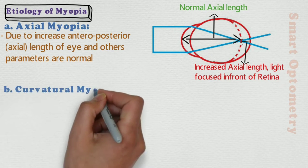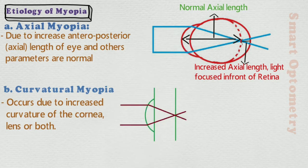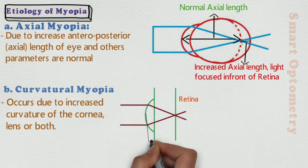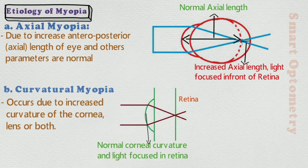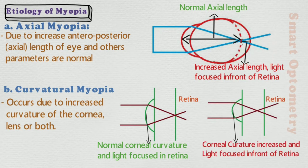B. Curvature myopia: it occurs due to increased curvature of the cornea, lens, or both. In this figure, normal corneal curvature and light focused on the retina. And here, in this figure, corneal curvature is increased and light is focused in front of the retina.